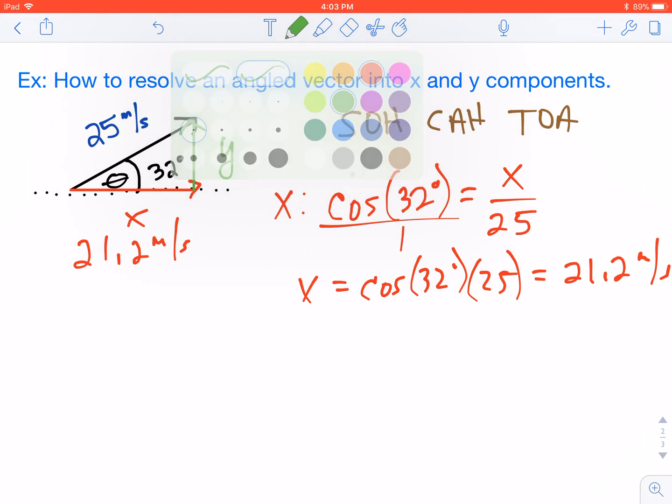We're going to use the same process to solve for the y component. That y is opposite of the angle, and once again, I know my hypotenuse. So, opposite over hypotenuse is the sine function.